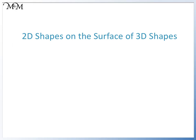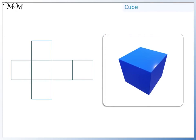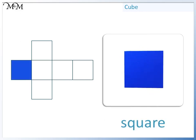Hi and welcome to our lesson on 2D shapes that are found on the surface of 3D shapes. Here we have a cube and its net. If we move the cube, we can see that its surface is made up of squares.